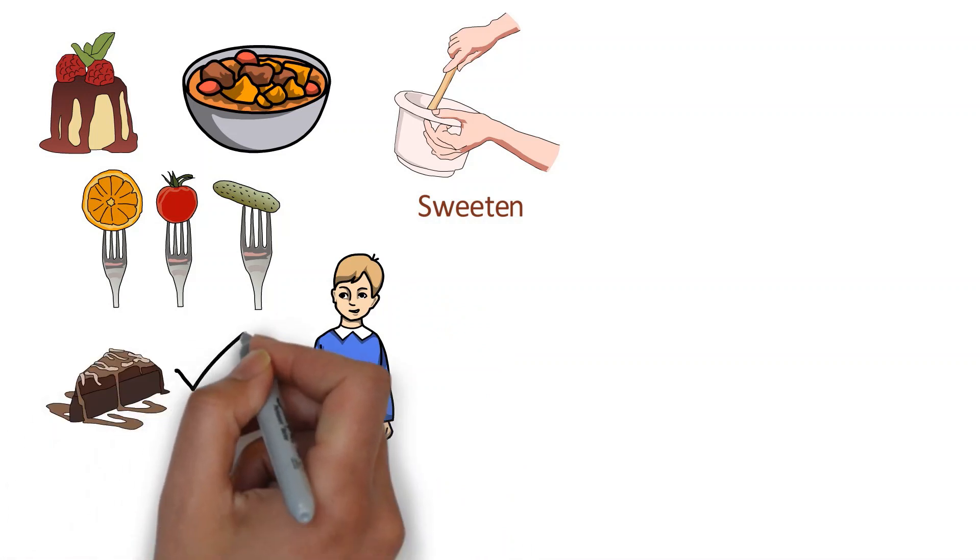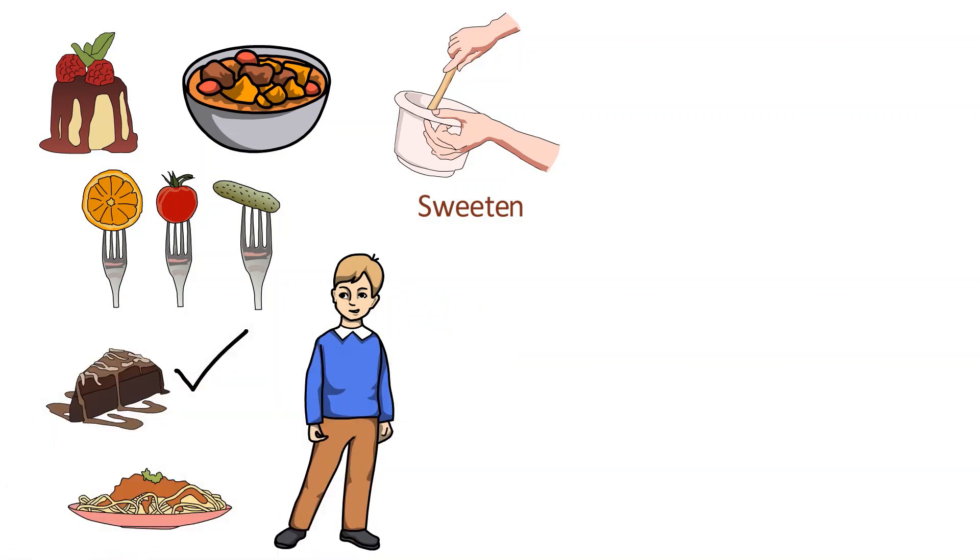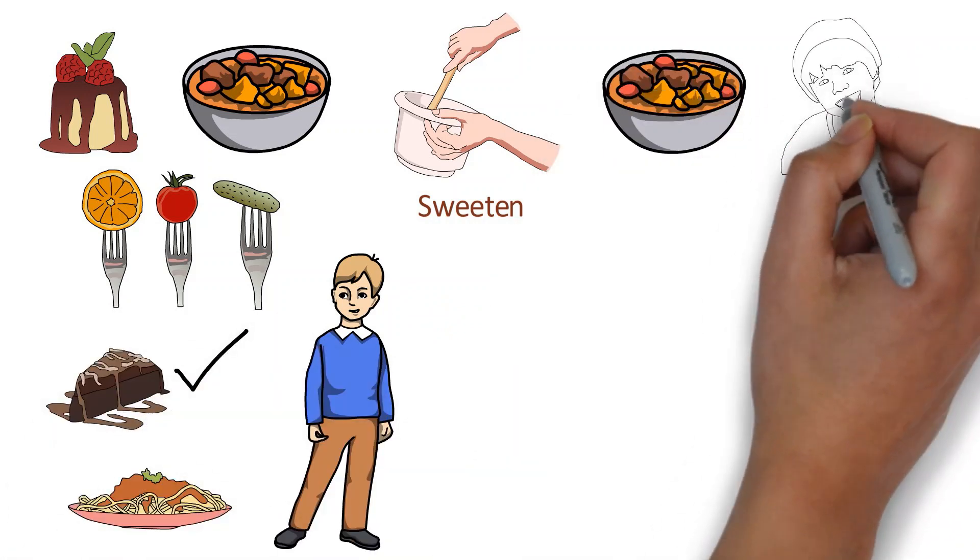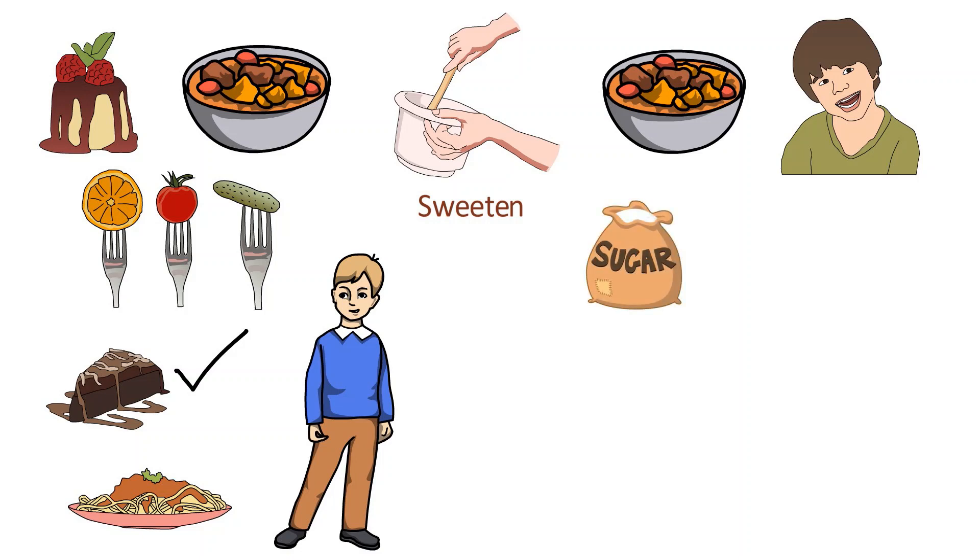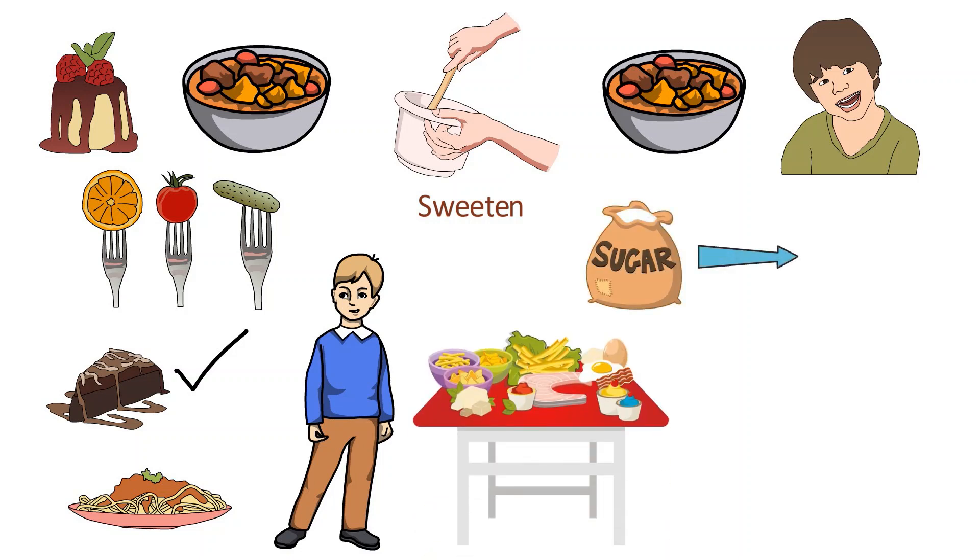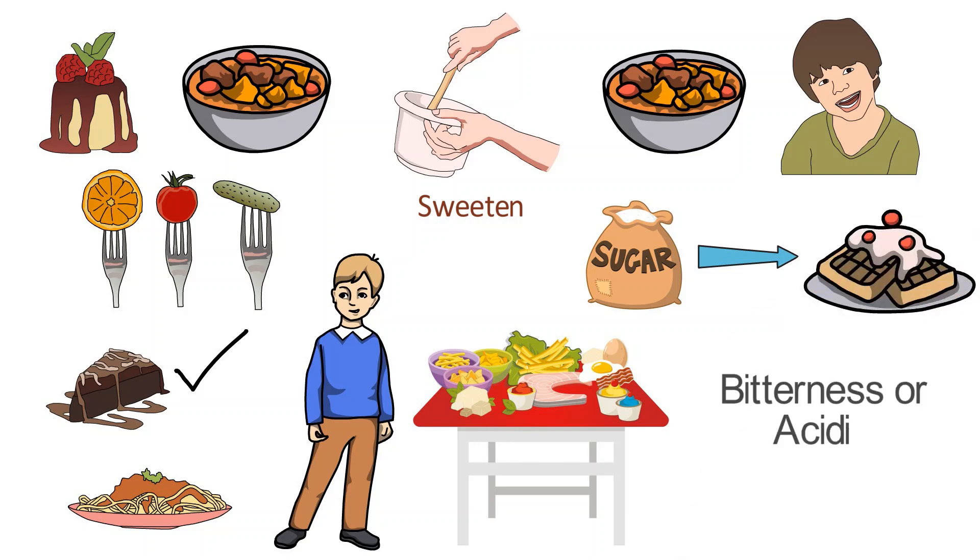They are more likely to choose a sweet option over an unsweetened one. In other foods not necessarily made for children, sugar plays an important role in balancing other flavors present in the dish. Sugar is added to foods to enhance some flavors and counteract excessive bitterness or acidity.